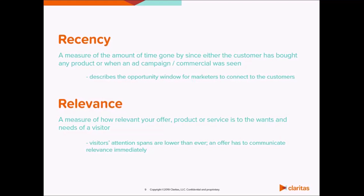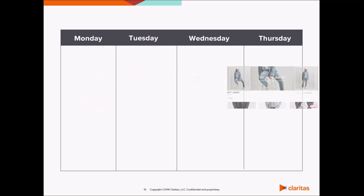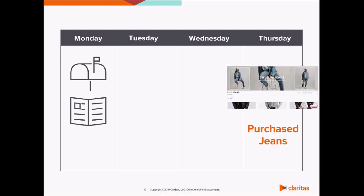Let's consider an everyday scenario. Say I'm in the market for some jeans. Last night, I visited Levi's website and ordered a pair of their 511s. Three days before that, I received a Levi's catalog in the mail, which I happened to thumb through. Attribution is the process of linking the purchase of those jeans with my having looked through the catalog — in other words, identifying whether a marketing touchpoint, in this case looking through the catalog, had the opportunity to influence my in-market behavior, which is purchasing the jeans. This process is the foundation of campaign measurement.